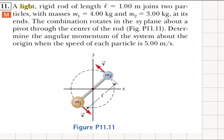So this is my pivot point at the center of the rod. Determine the angular momentum of the system about the origin when the speed of each particle is five meters per second.